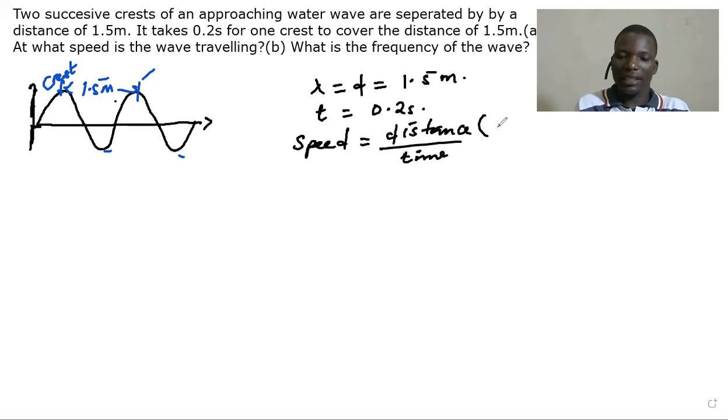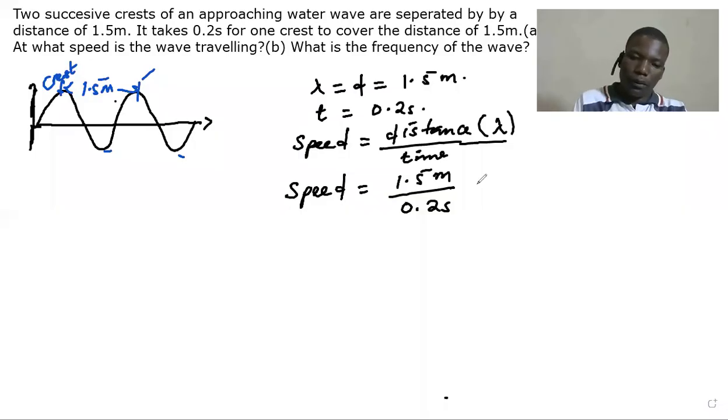And this distance is the wavelength that we have. So we just substitute: speed is going to be 1.5 meters divided by 0.2 seconds. If we punch on the calculator what we are going to have is 7.5 meters per second. So this is going to be the speed of the wave.